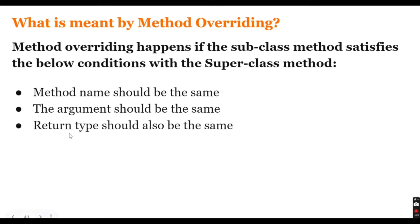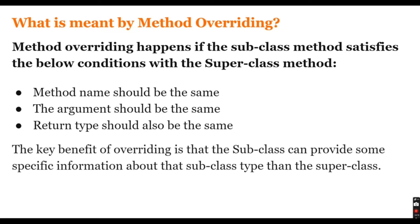The return type should also be the same — meaning the entire signature of the method should be the same: return type, name, and number of parameters. The key benefit of overriding is that the subclass can provide specific implementation for the subclass type rather than relying on the superclass, allowing you to provide implementation as per the specifications of the child and parent class respectively.